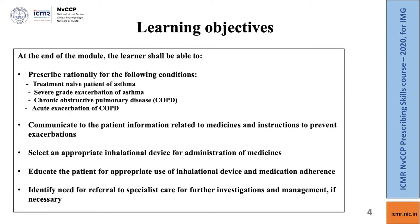The learning objectives of this module: the learner at the end of the module shall be able to prescribe rationally for stable asthma, severe grade exacerbation of asthma, stable COPD, and acute exacerbation of COPD. You should be able to communicate to the patient information related to prescribed medicines and give instructions on how to prevent exacerbations, select an appropriate inhalational device, educate the patient for correct use of inhalational devices and medication adherence, and identify the need for referral to specialist care if necessary.